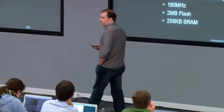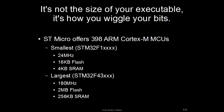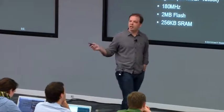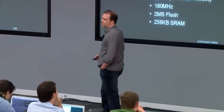On these microcontrollers, less is more. STMicro offers 398 ARM Cortex-M microcontrollers. The smallest is 24 MHz, 16 kilobytes of flash, and 4 kilobytes of SRAM. The largest is 180 MHz, 2 megabytes of flash, 256 kilobytes of SRAM. Adam Ruppe is giving a talk tomorrow on bare-metal x86 and mentioned getting a binary down to 30 kilobytes — that's already twice the size of the smallest MCU, so we've got to do better.